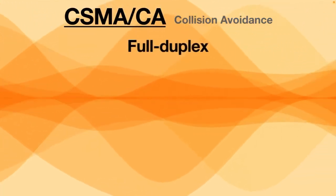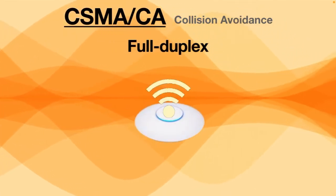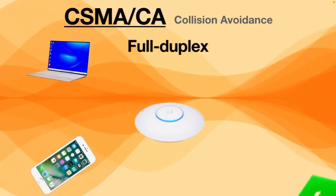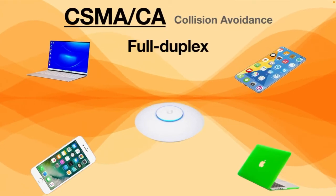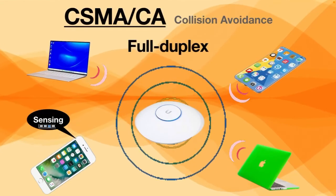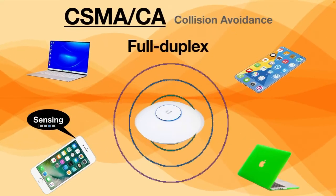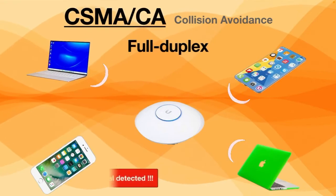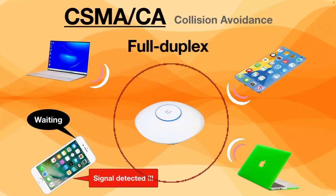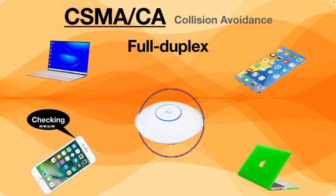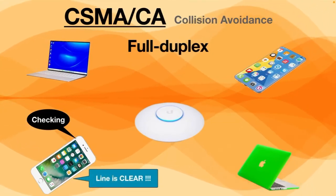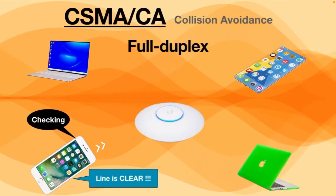CSMA/CA — Collision Avoidance — is a more advanced technology than the previous one, used in full-duplex networks. CSMA/CA is used mostly in wireless networks because wireless networks often have multiple devices that can see an access point but not each other. This technology avoids collisions by listening or sensing for a transmission signal before sending data. If a signal is detected, the device waits for a short period of time before checking the channel again.